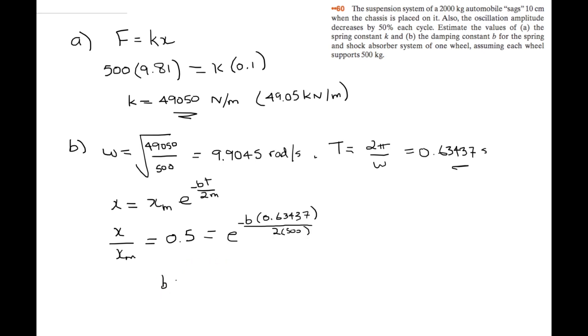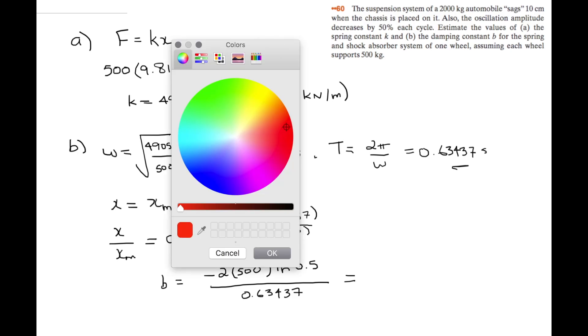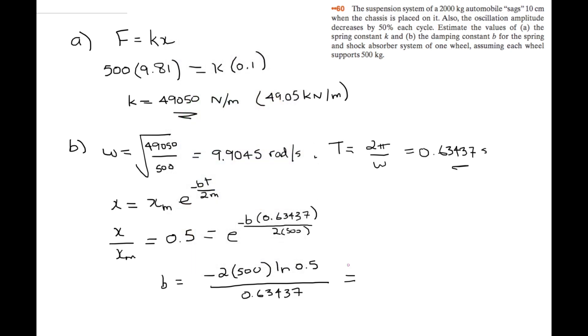we get b equals negative 2 times 500 times the natural log of 0.5, all divided by 0.63437, and this gives us 1,092.65.